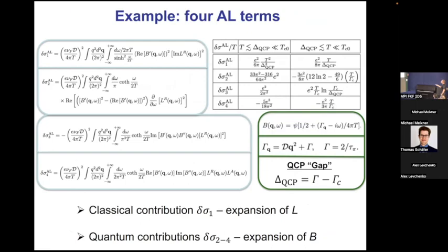So the classical one that comes from expanding the propagator indeed, like in Menev-Sigrist, vanishes.